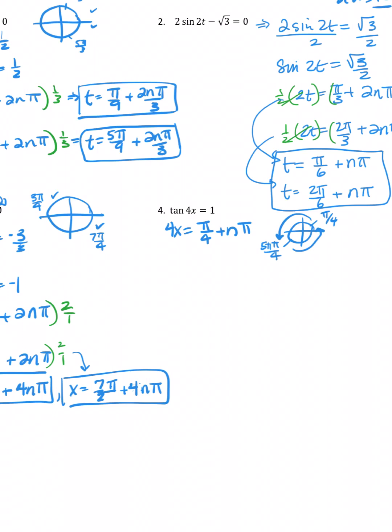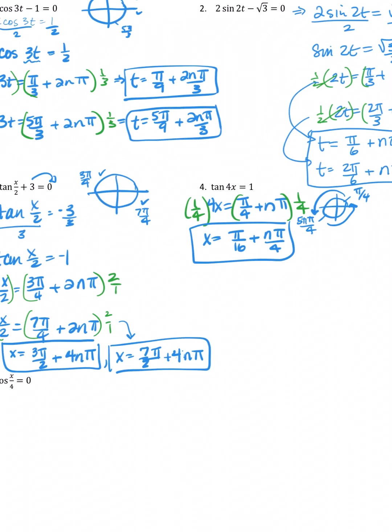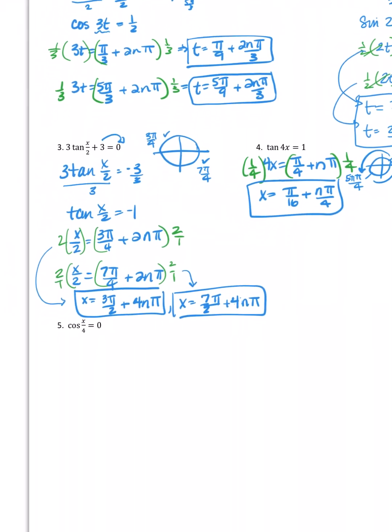So I'm going to use the shorthand versions, but still, I need to do that last step of multiplying through by one fourth across the board. When I do that, I'm going to have x equals pi over 16 plus n pi over four, and that's my answer. Again, if you do it the other way, it's not wrong. It's just a few more steps.